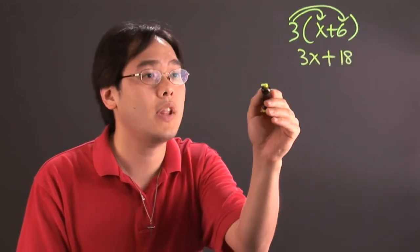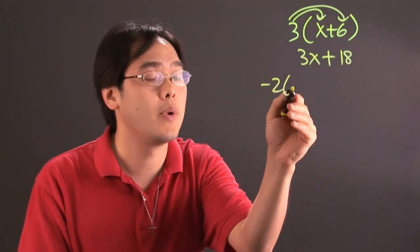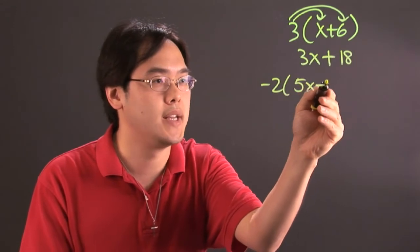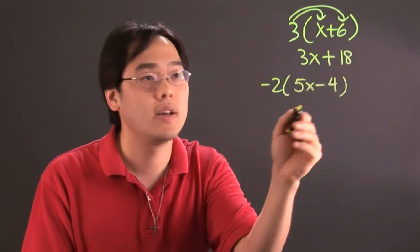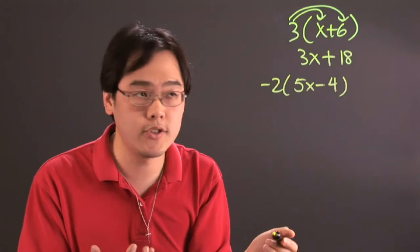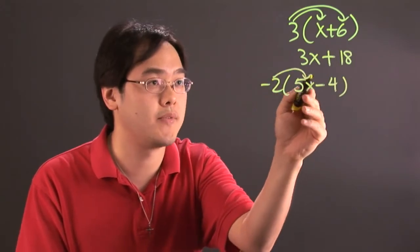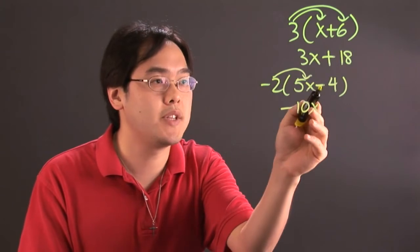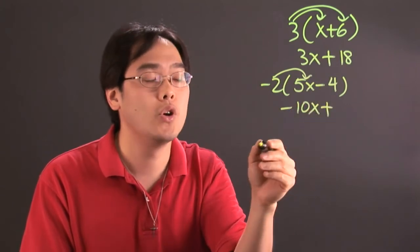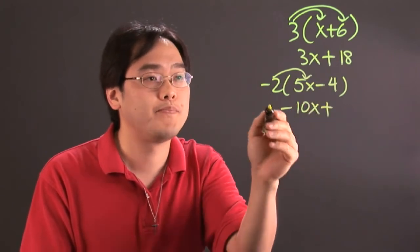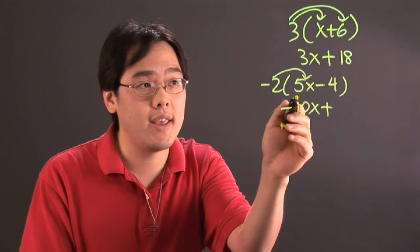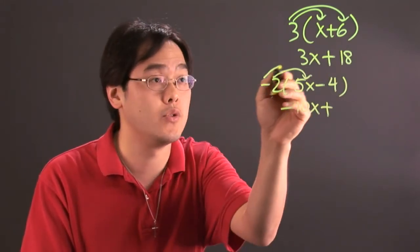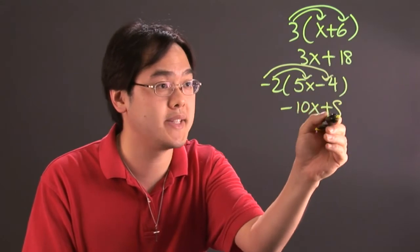Now if you have negative 2 times (5x minus 4), same kind of idea — you're multiplying negative 2. So negative 2 times 5x is going to give you negative 10x. Now you have a negative times a negative, that's going to give you a positive. So negative 2 times negative 4 is going to give you a positive 8.